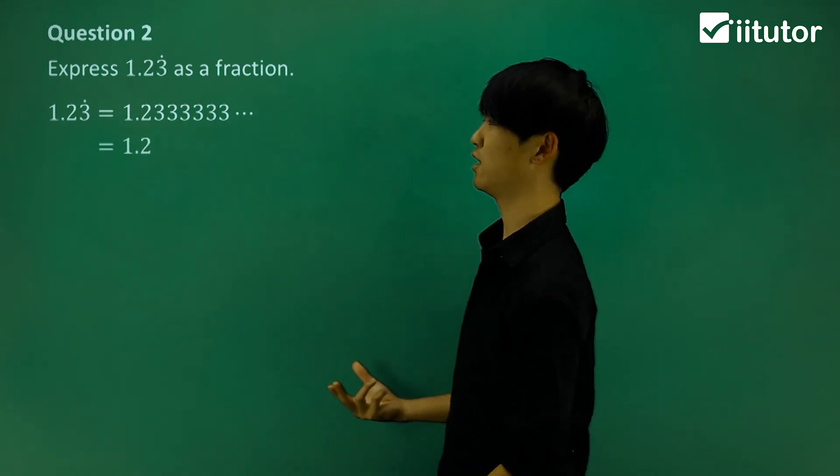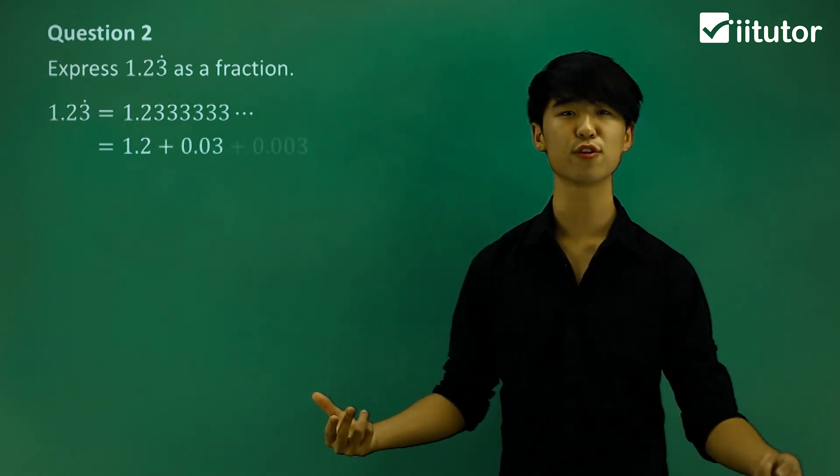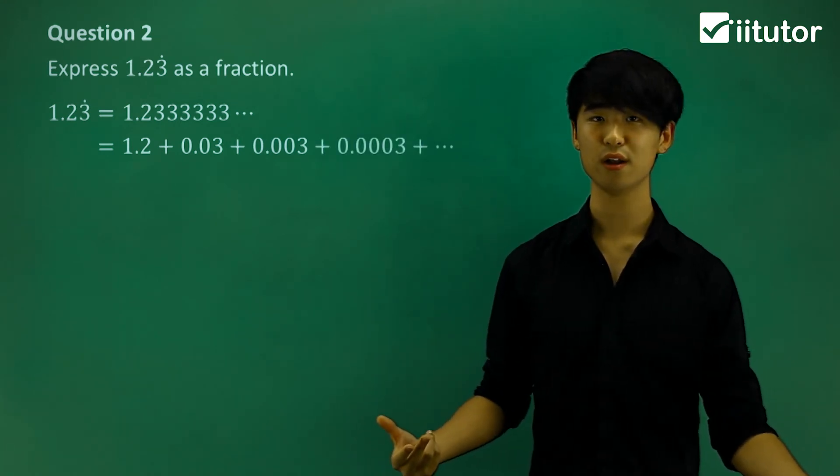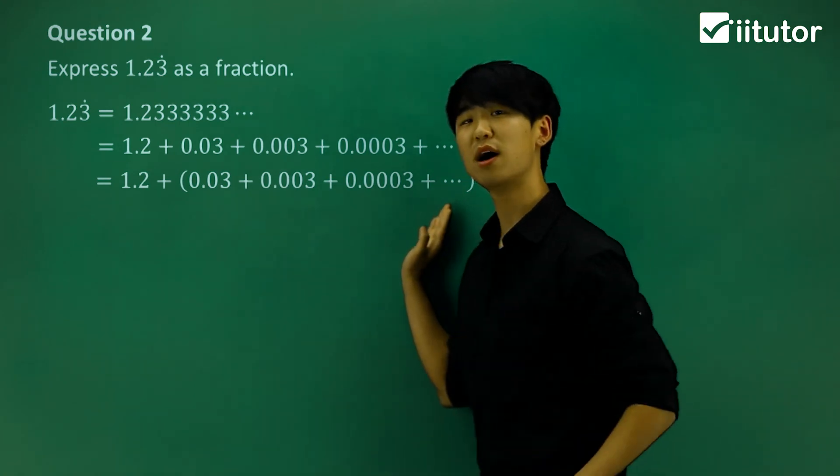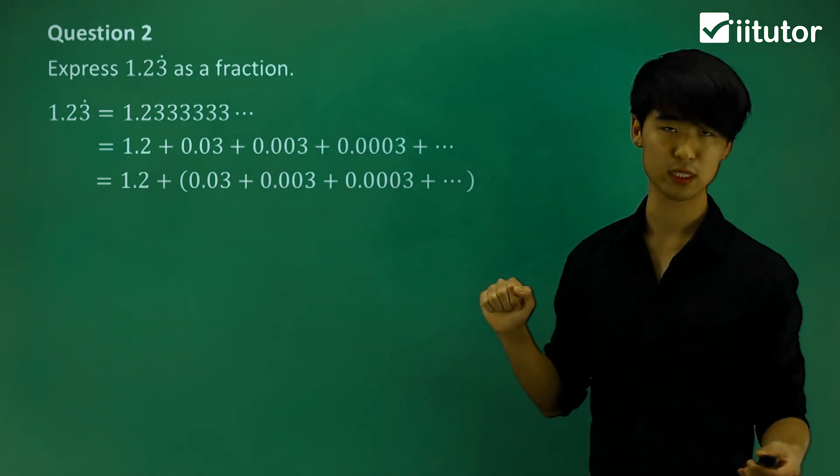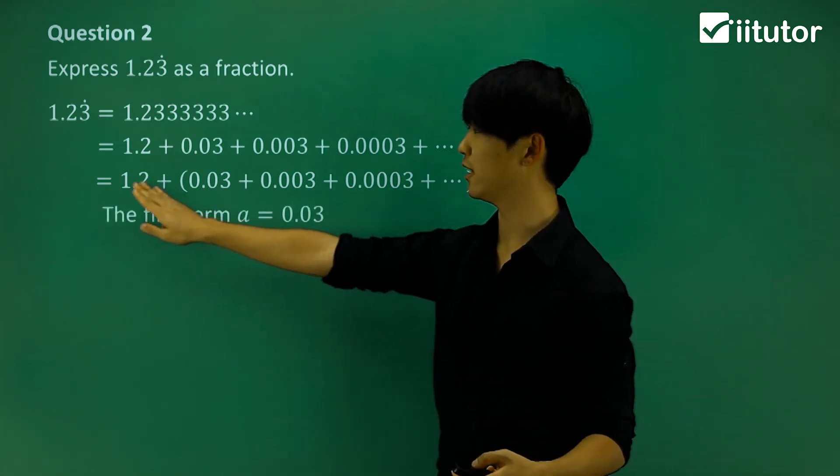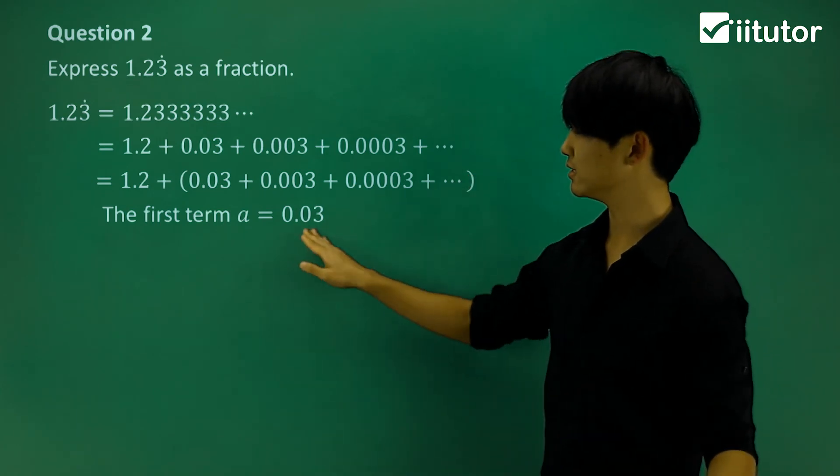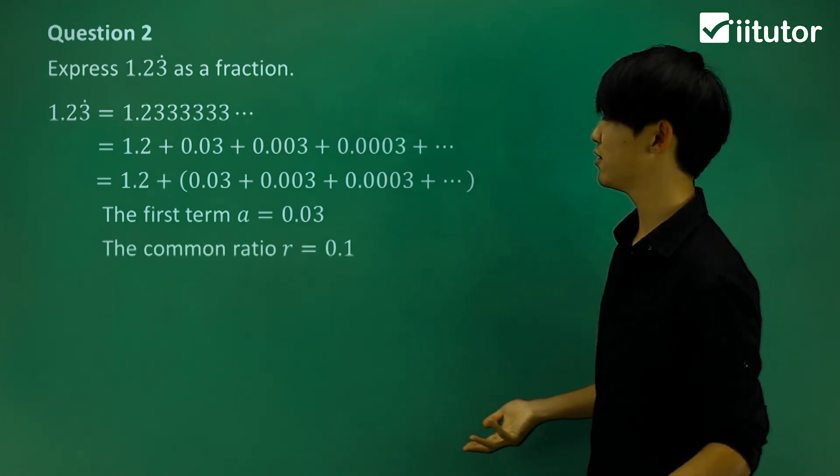Well, I'm going to have 1.2 to start off, and just try and add all my recurring bits. So 0.03, 0.003, and so on. And from there we can see only this portion is my geometric series, which we can also see has a limiting sum. So that 1.2 is just an extra value. Now, from this geometric series here, we can see the first term is 0.03, and common ratio is 0.1.